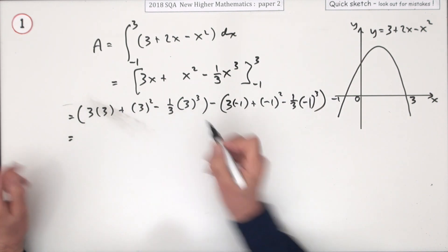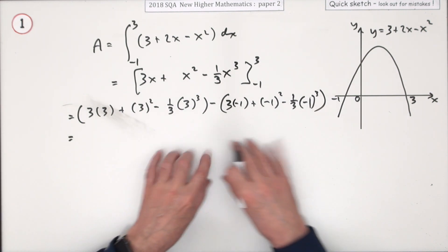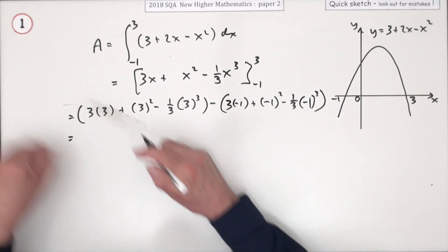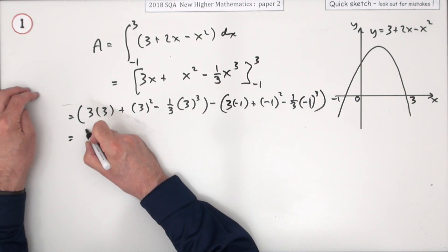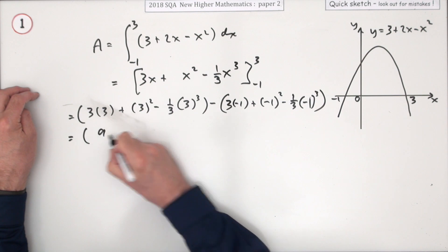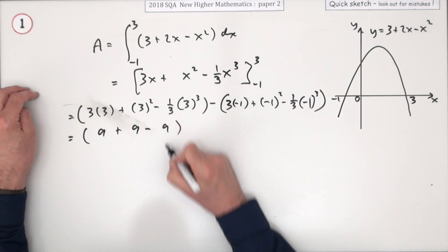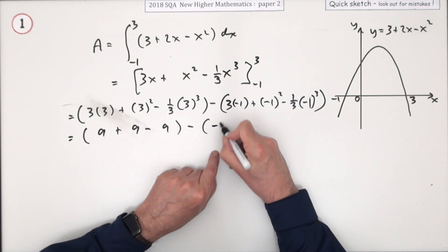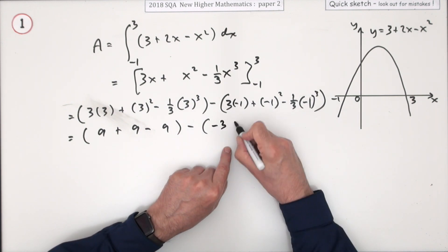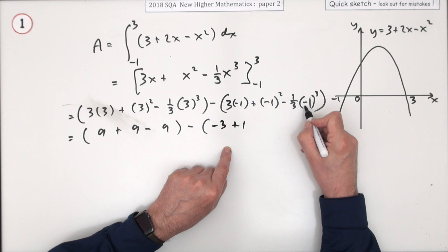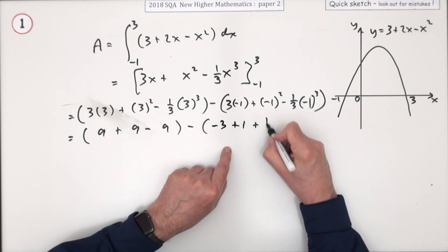And the last mark will be for evaluating it. So you could just press the buttons on your calculator. These are quite straightforward here, aren't they? Because that's just a 9 plus another 9 and that knocks at one of those 3s. So that's another 9. Take away, that's a negative 3, that'll be positive 1. I've got 4 negatives here so that'll be plus a third.